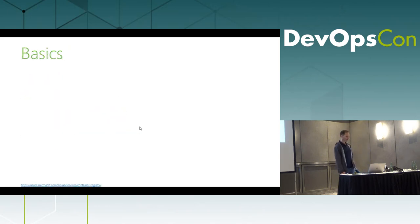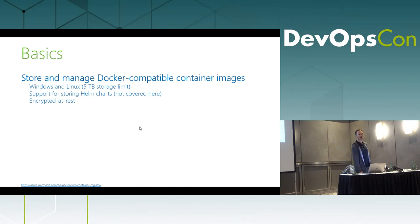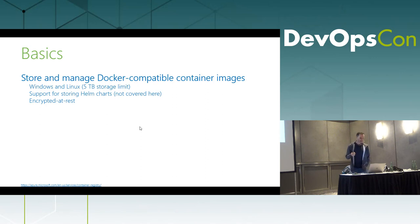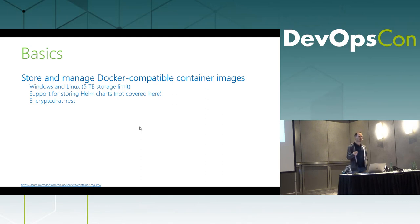Now let's go into the topic. What is Azure Container Registry? Azure Container Registry is a storage platform for Docker-compatible container images. It supports Windows and Linux, so you can store both types of images, and in total you have a five terabyte storage limit. It is also possible to store Helm charts on Azure Container Registry. When we talk about cloud, data security is always very important — all your data is encrypted at rest, and decrypted just in time whenever you access it.